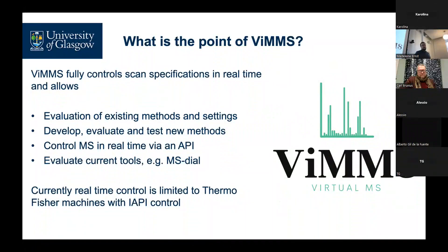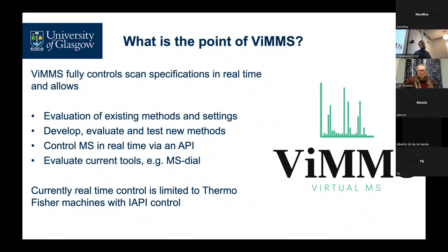So what is the point of a virtual mass spectrometer? The point, at least in our eyes, is to evaluate existing methods and settings. For instance, one of the things we're interested in is how do you optimize Top-N — how do you choose the dynamic exclusion window, how do you choose N for an individual experiment. You can also develop and evaluate new methods. We spend a lot of time developing methods in VIMS which can then be applied to real samples and potentially developed as a full program later on.